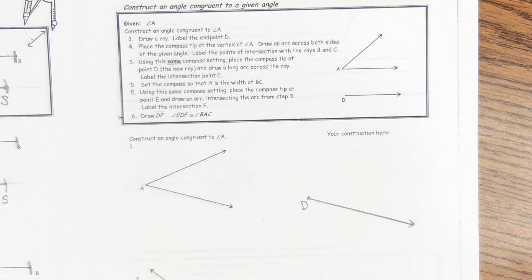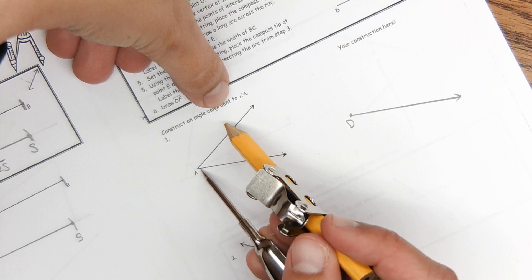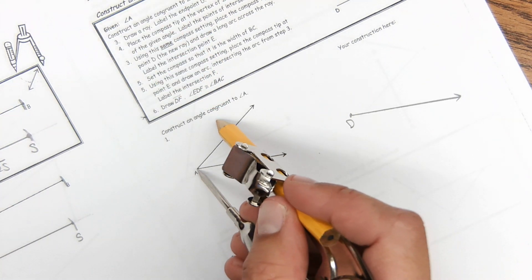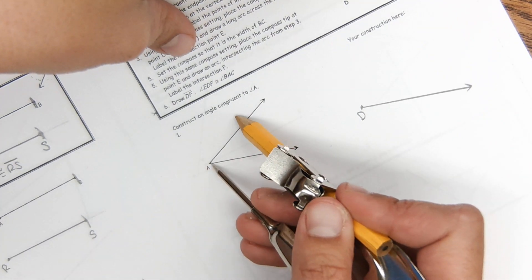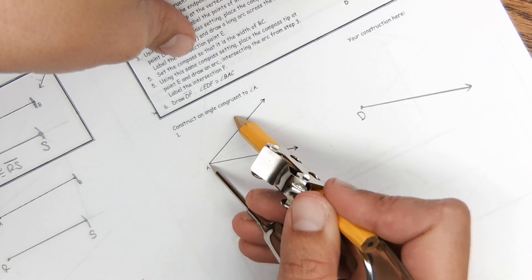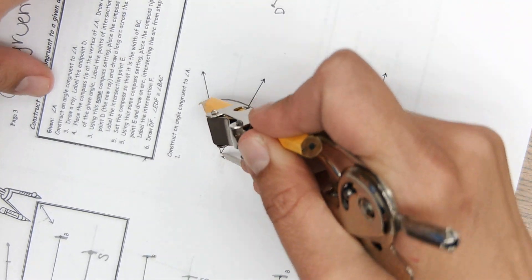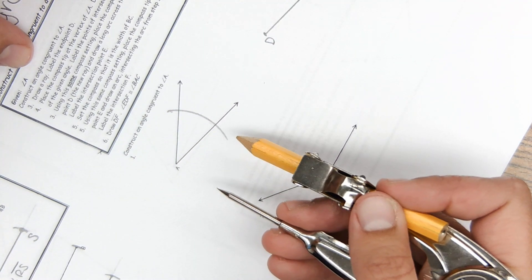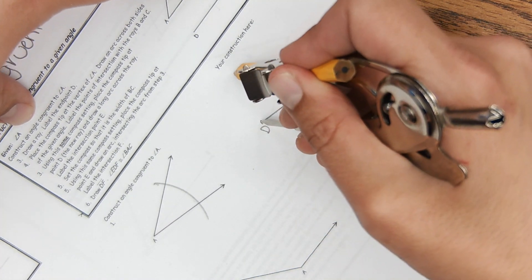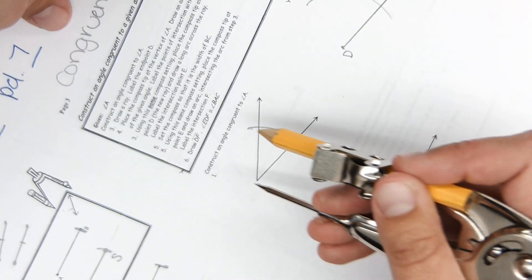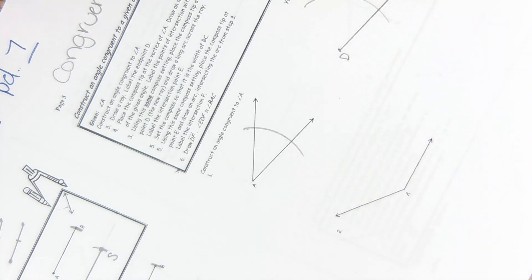Okay, the next step, are you ready, is to put the compass on point A, and it doesn't matter what the arc measure is right here, but we're going to make an arc that goes through both of the rays like this. So I put it on A and I just made an arc that crosses both of the rays, and then using the same measurement without moving the compass, I'm going to put it on D and make the same arc. So I put it on A, I made an arc, then using that same measurement put it on D and made that same arc.